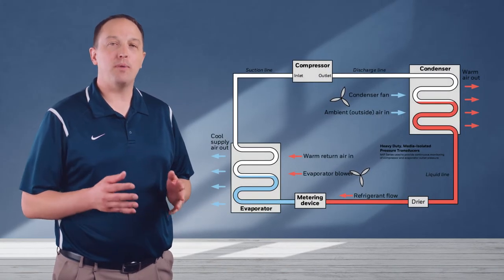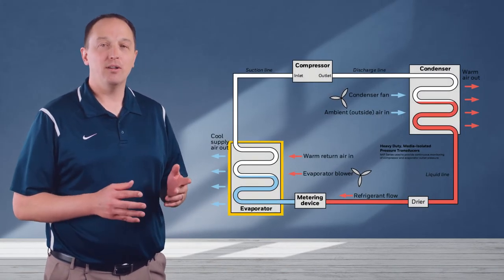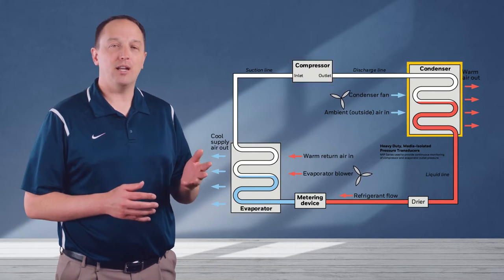Industrial refrigeration units include four basic components: an evaporator, a compressor, a condenser, and a metering device.